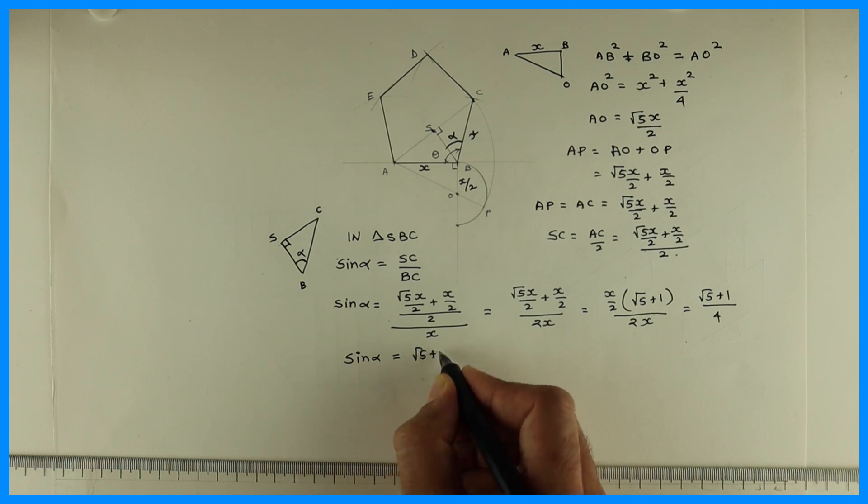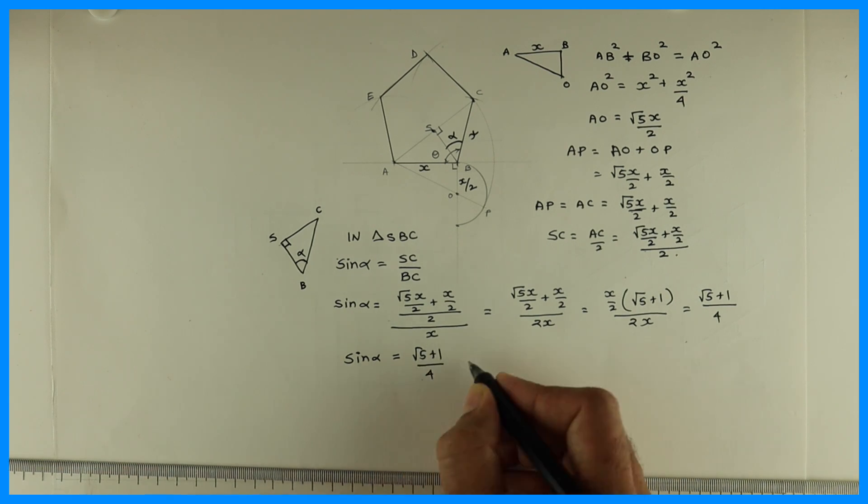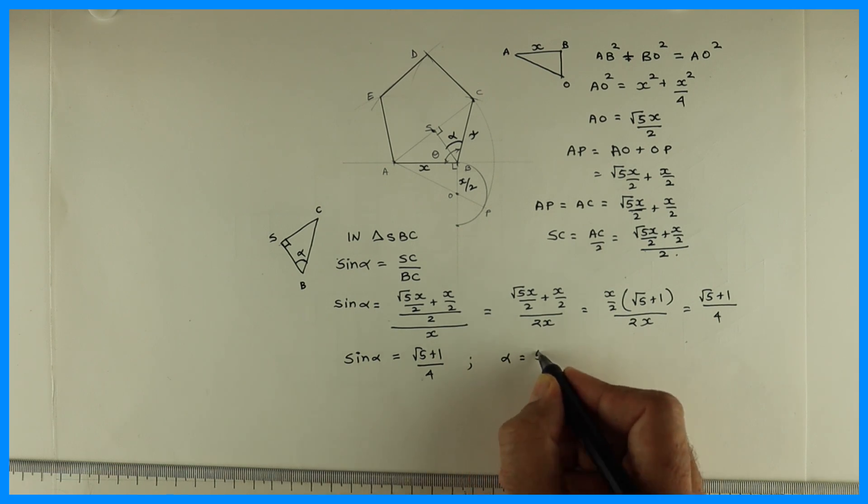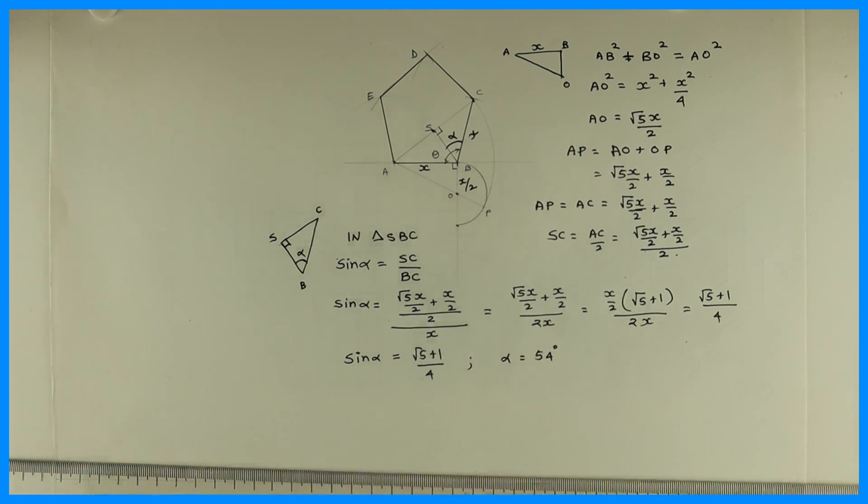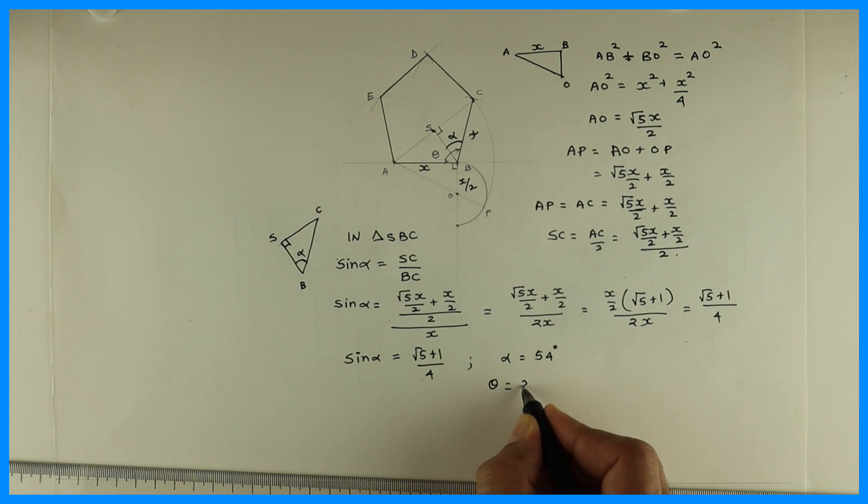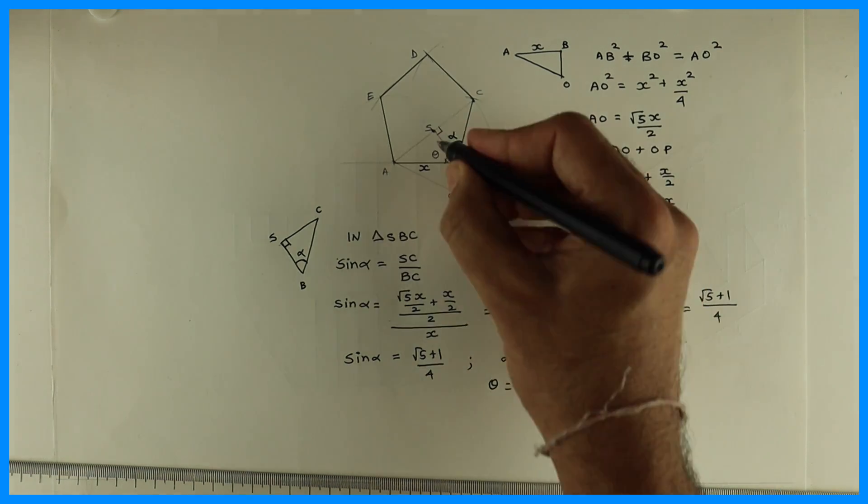And when you find the value of alpha with this method, alpha is equal to sin inverse of this value. Then it comes 54 degrees. If alpha is 54 degrees, then theta would be how much? 2 alpha, right? That is 108.